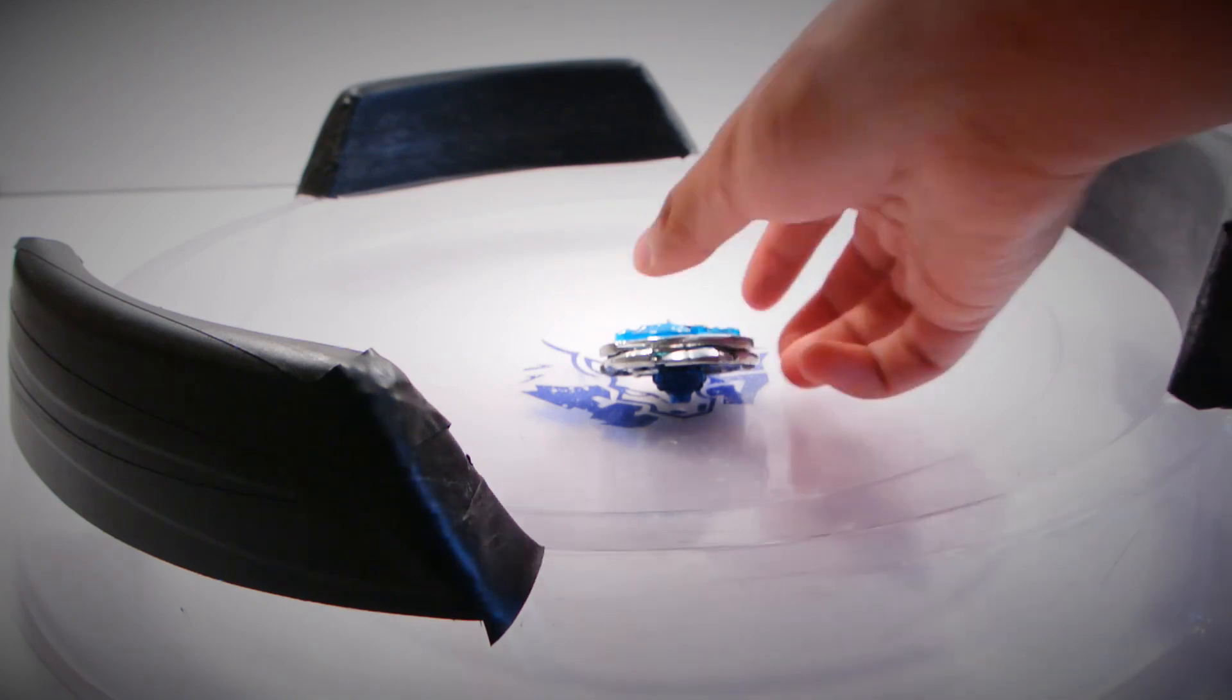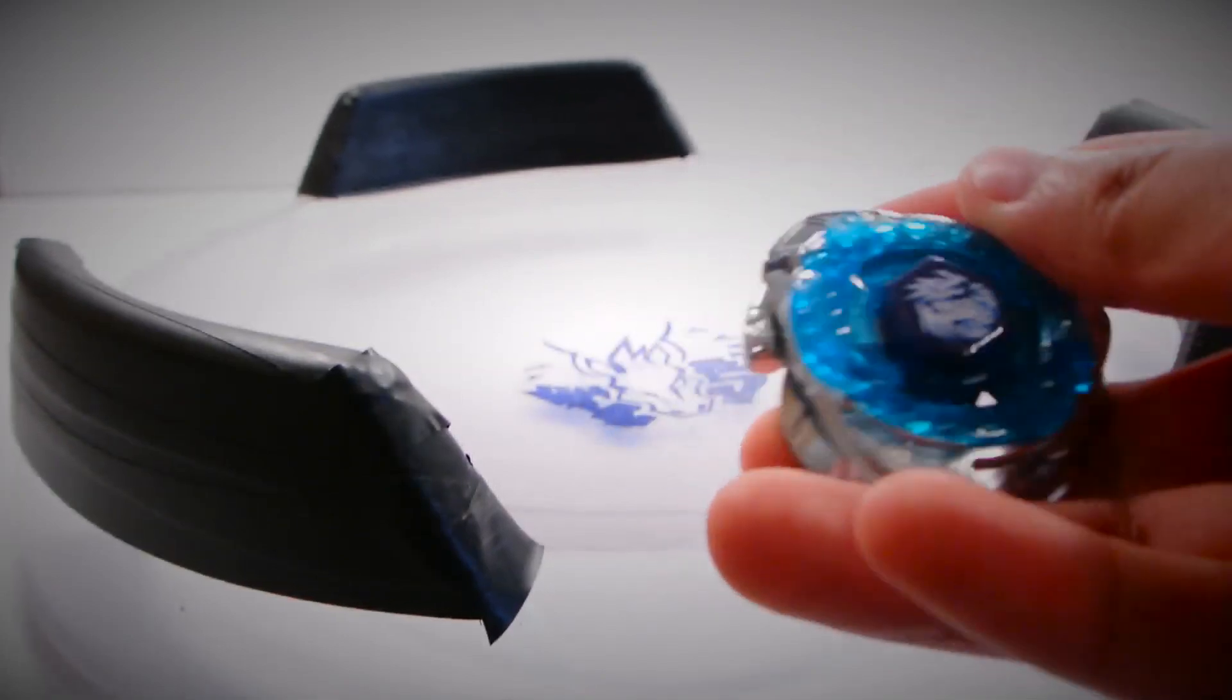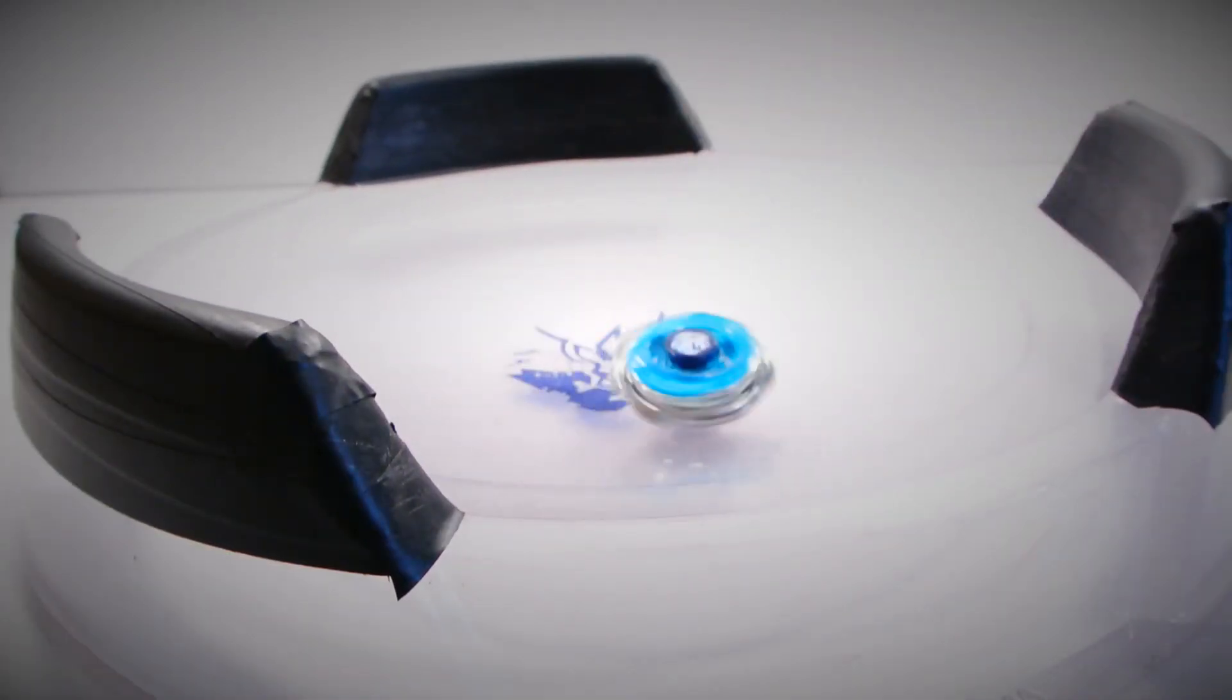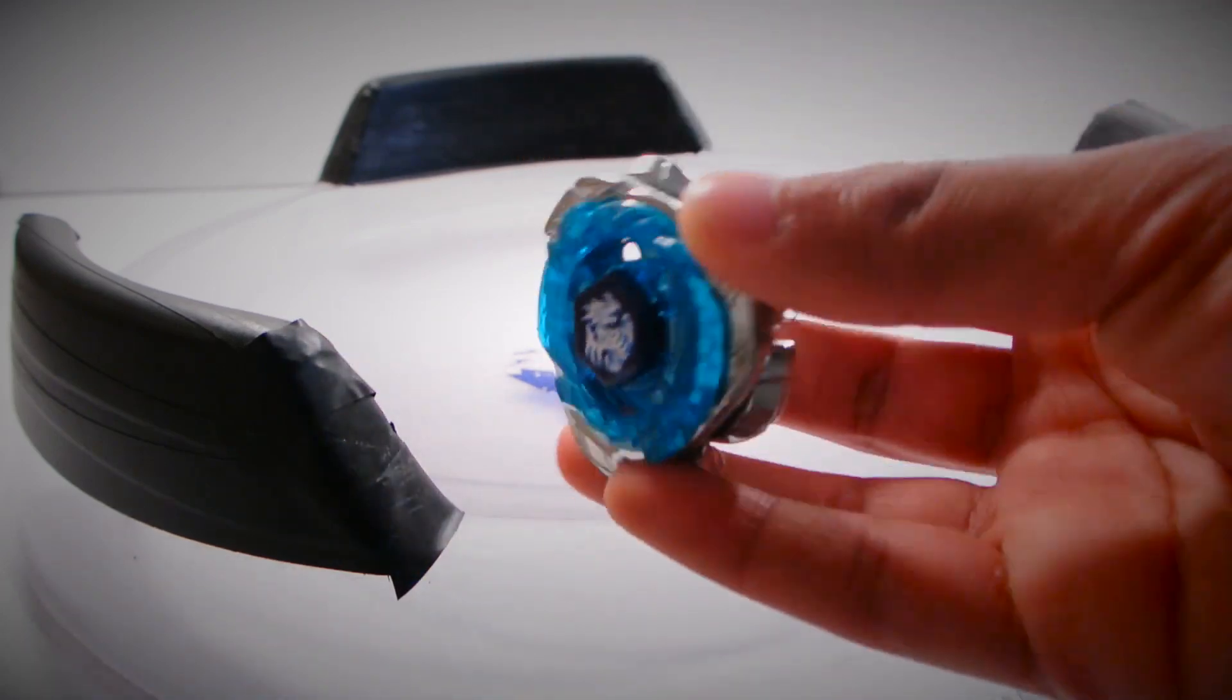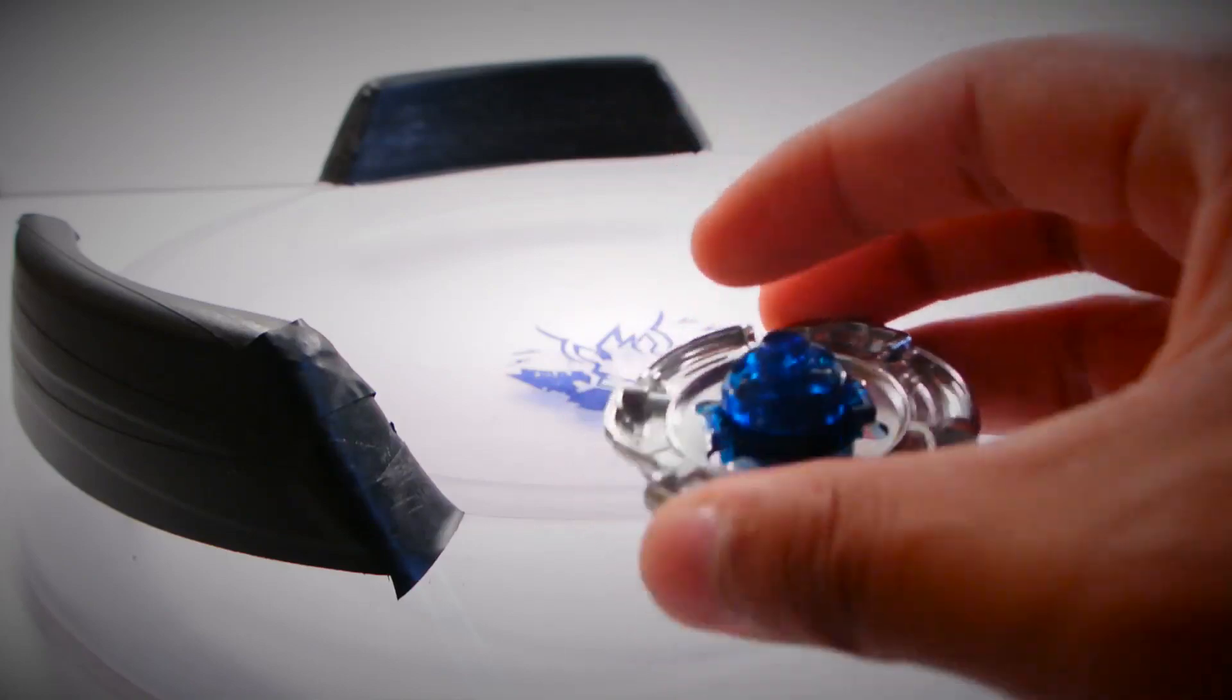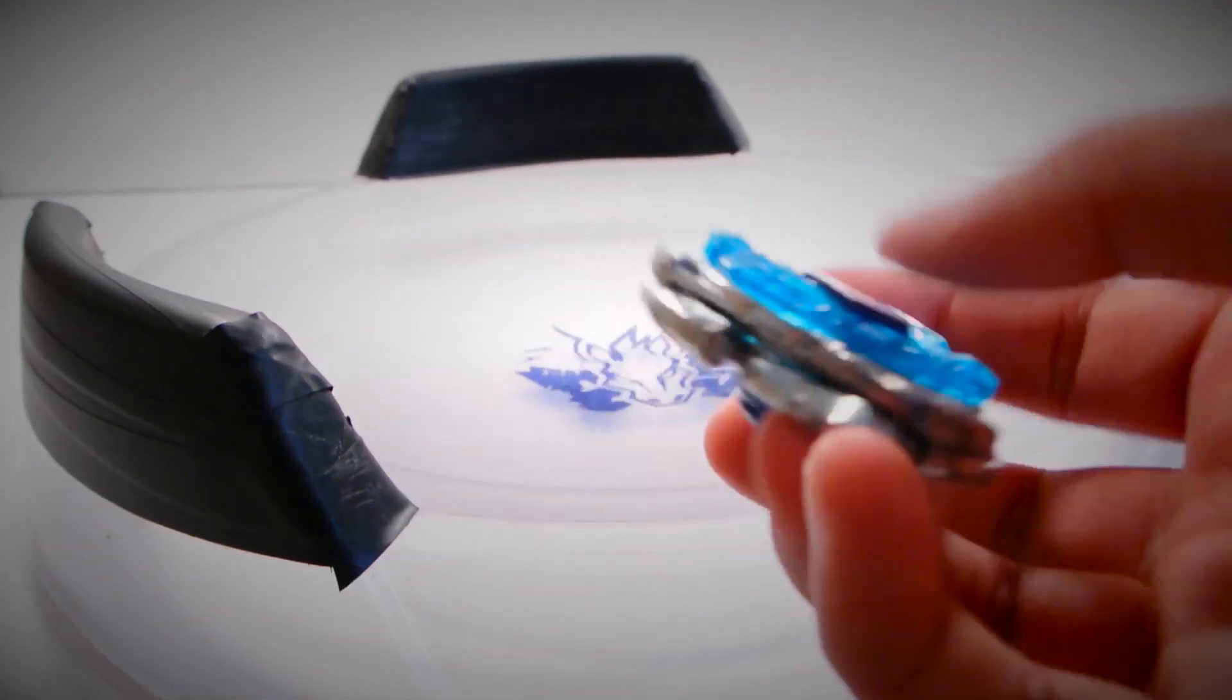The Beyblade scrapes a lot, mainly because of the short track and tip. Whenever you launch this it scrapes pretty much instantly if you perform any kind of slide shoot or anything. If you're planning to buy this Bey, make sure you switch out the track or the tip because this will scrape a lot and possibly damage your stadium. If you have a BB-10, you don't want to get that thing damaged.